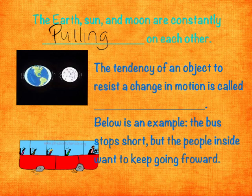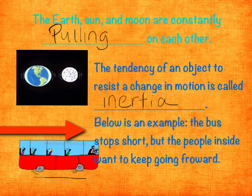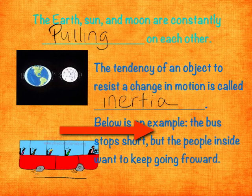That's where inertia comes in. Inertia is the tendency of an object to resist a change in motion. Here's an example: here's our bus, and the bus driver stops short. All of the people on the bus, when it stops short, want to keep going in that direction, because although the bus stops, their bodies are still moving that way and they keep wanting to go in that particular direction.